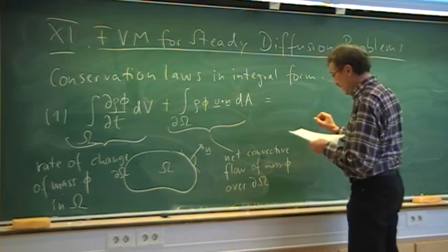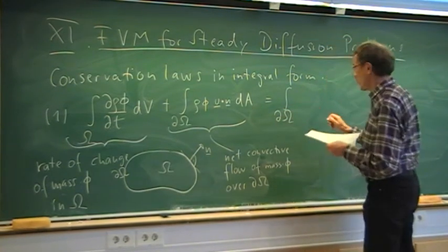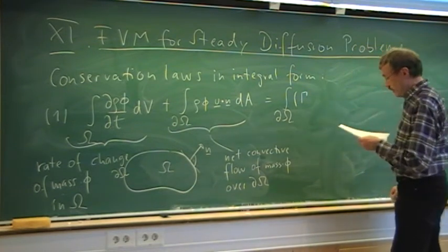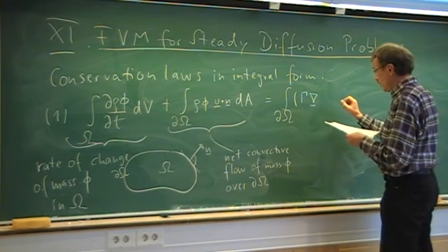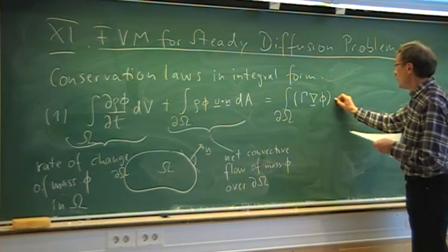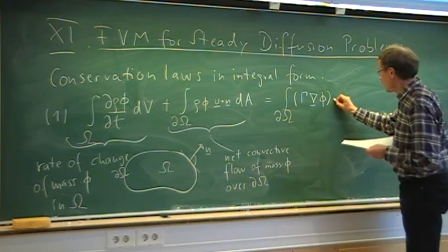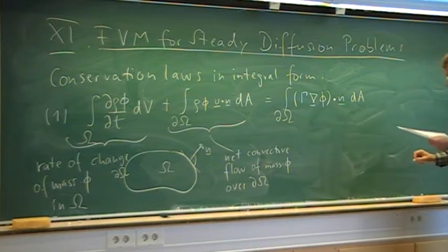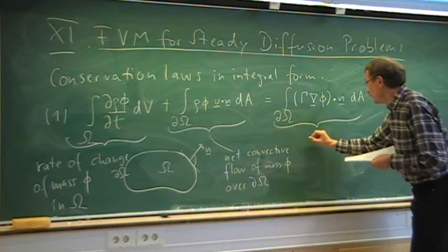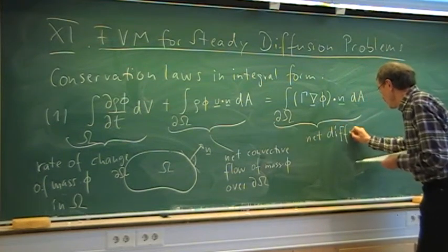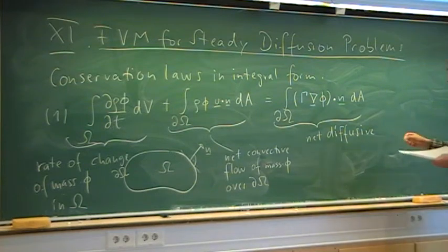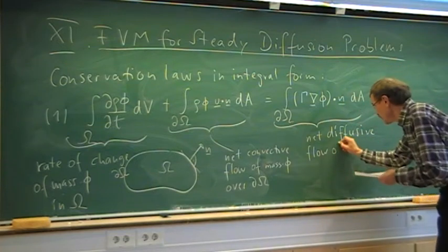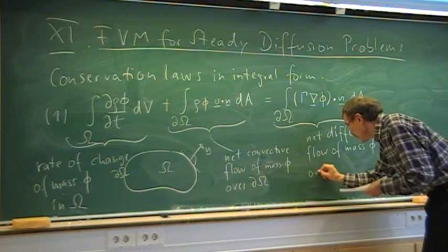We also have a diffusive flow, described as a surface integral involving the diffusion coefficient gamma — this notation is from Patankar — times the gradient of phi dotted with the outer unit normal vector n. That is the net diffusive flow of the quantity mass times phi over the boundary of the control volume. For example, if phi is a mass fraction describing diffusion of some species, we can have that.